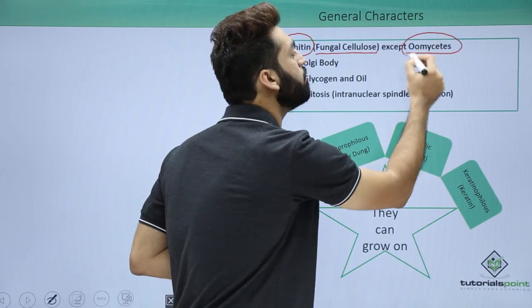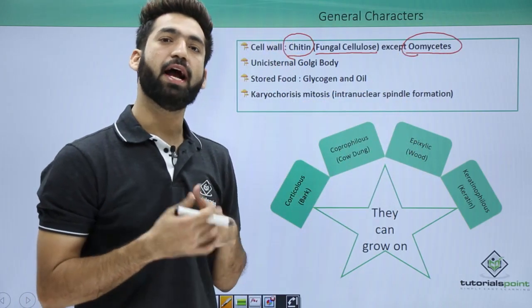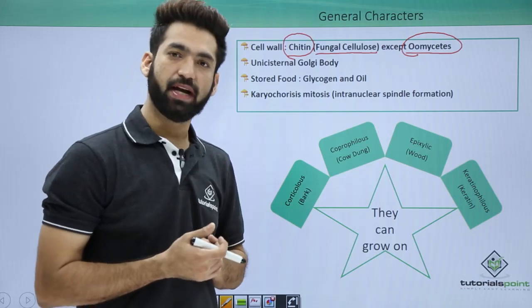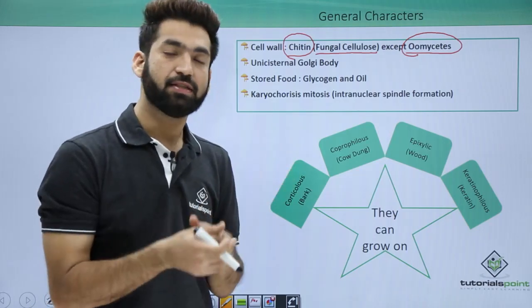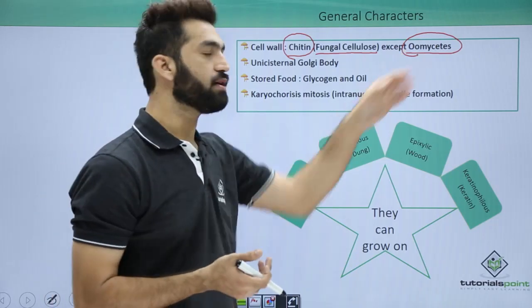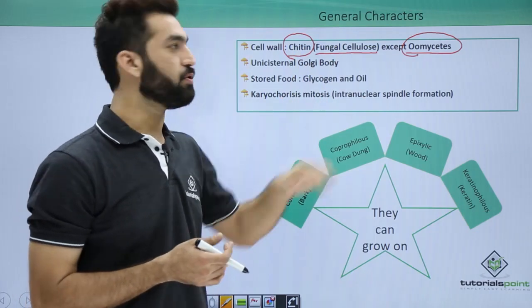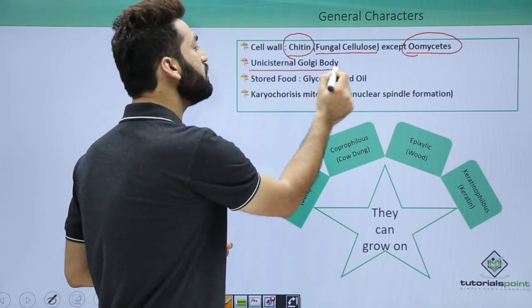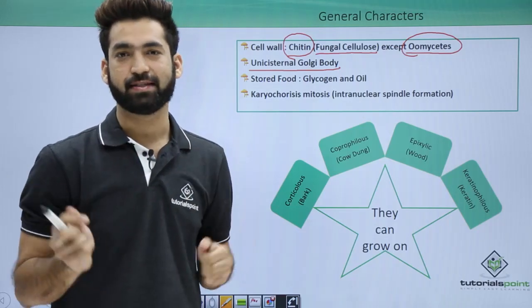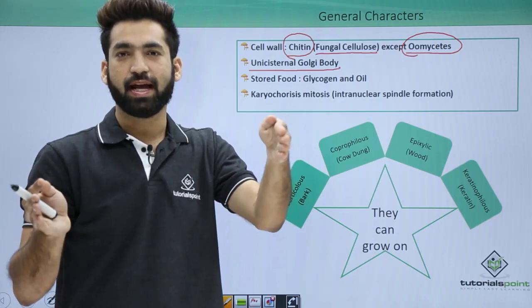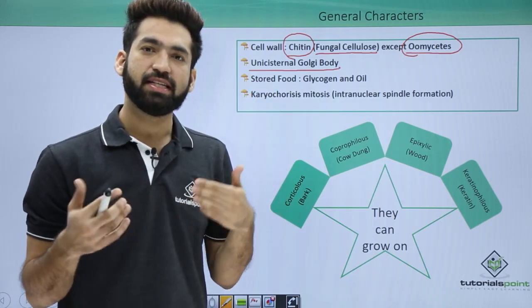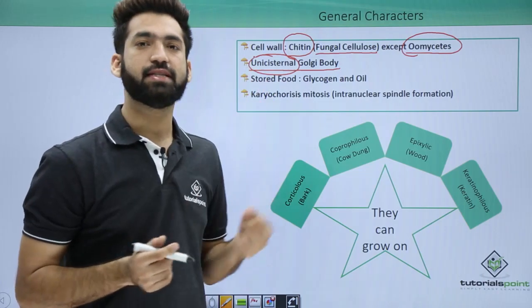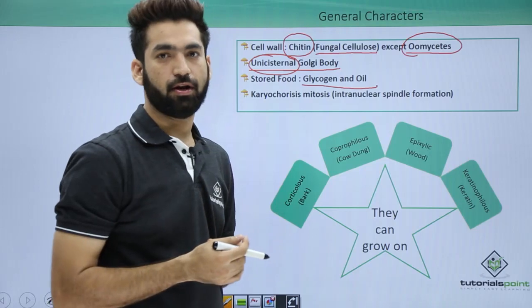Chitin is present in the cell wall of all fungi except the class Oomycetes. Oomycetes members are also called algal fungi because their cell wall is made up of cellulose, similar to algae. So leaving Oomycetes, all other classes of fungi have a cell wall made of chitin. The Golgi body in fungi is unicisternal — it consists of just one cisterna, unlike the 4 to 8 cisternae found typically in other organisms.